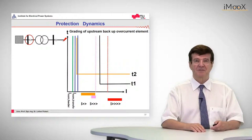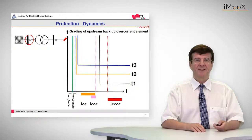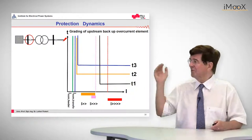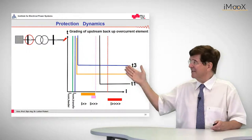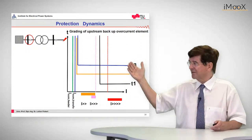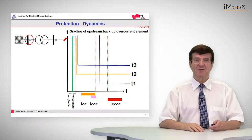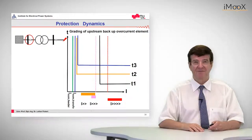Once we have found a value for that, this is the complete picture. The tripping time is T3, and this is the full picture of a high set element, a low set element on the high voltage side of the transformer, and a feeder protection which operates after T2. Thank you very much.